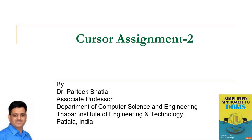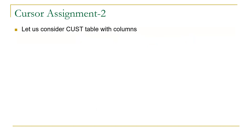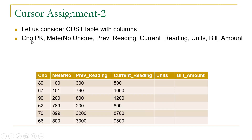Namaskar, myself Pratik. In this session we are going to discuss problem statements for cursor assignment number two. Let us consider a customer table with columns: customer number (primary key), meter number (with unique constraint), previous reading, current reading, units, and bill amount.